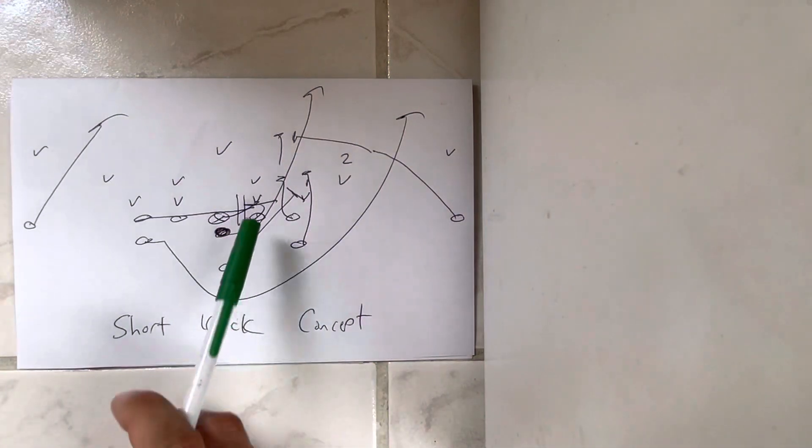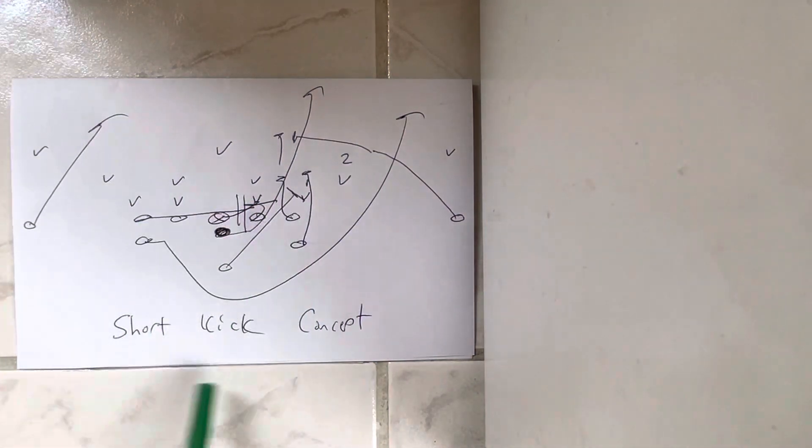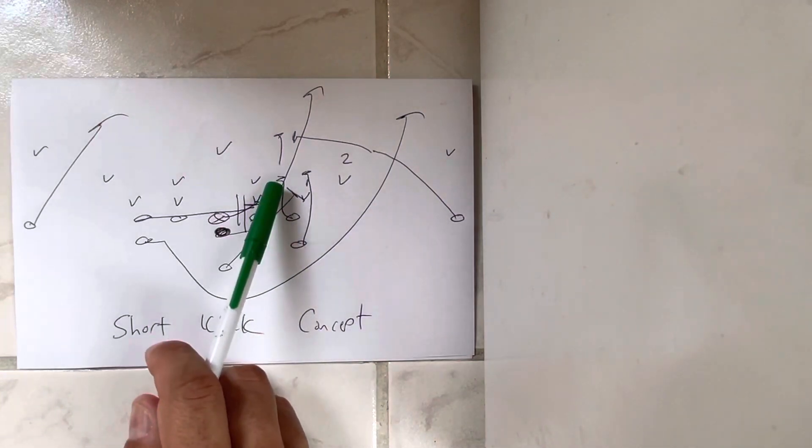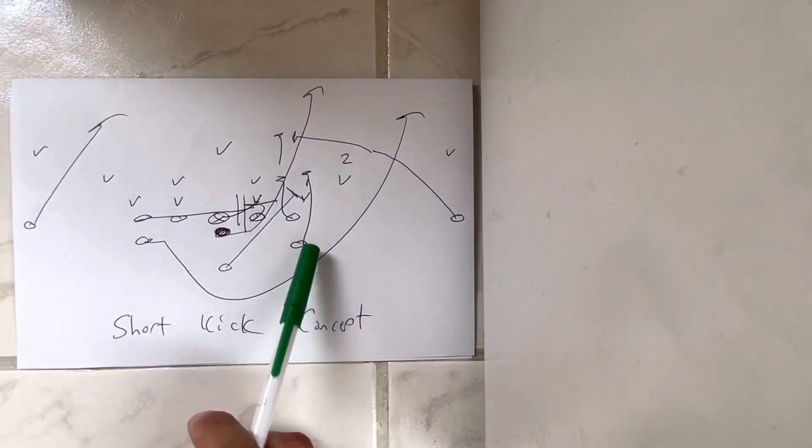And you block it just like triple. You double the action key, you double scoop on the backside, tackle veers inside. He's got the mic to the free safety.